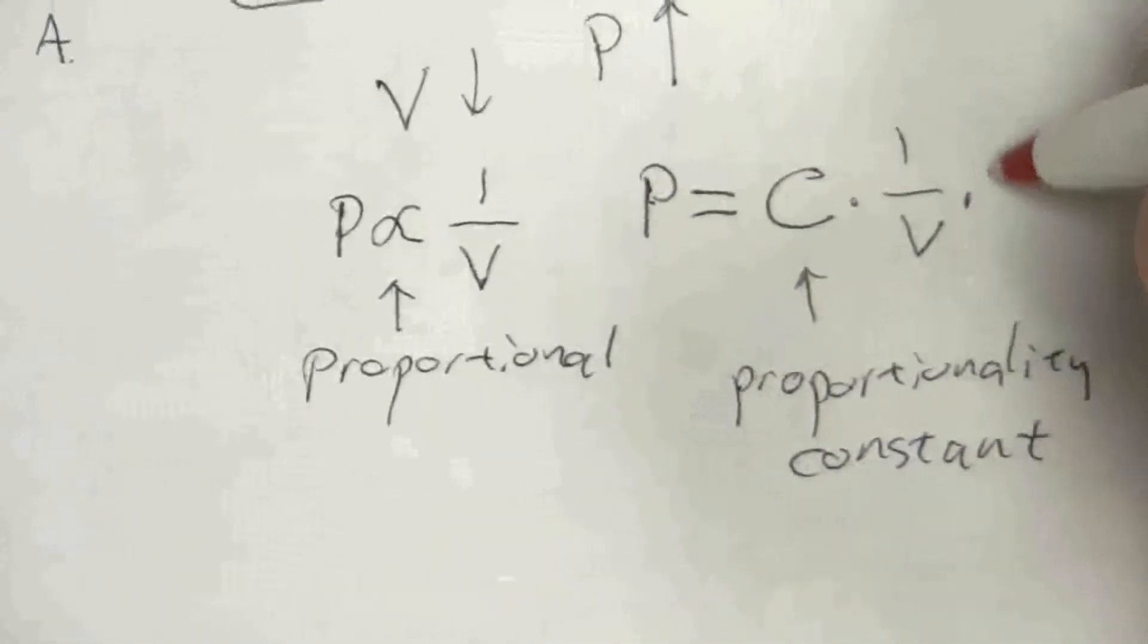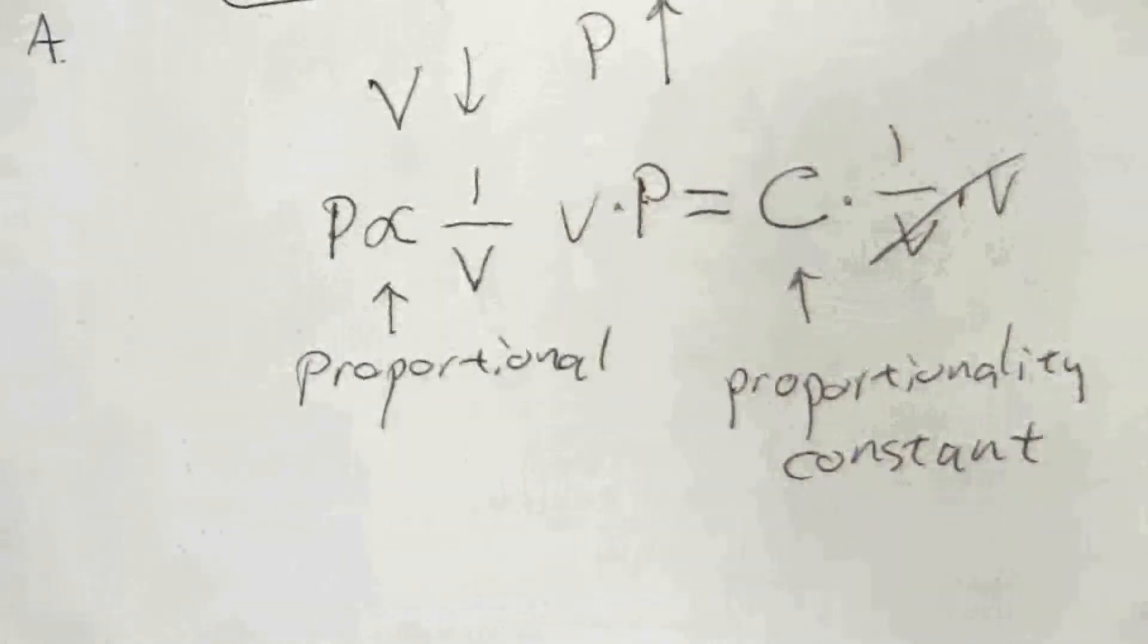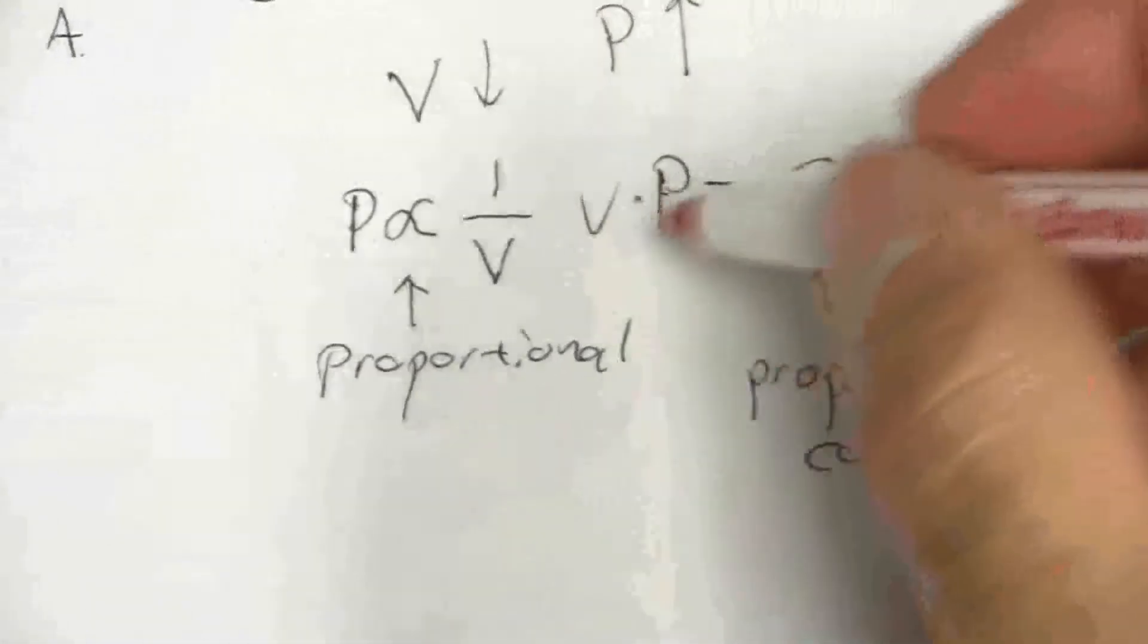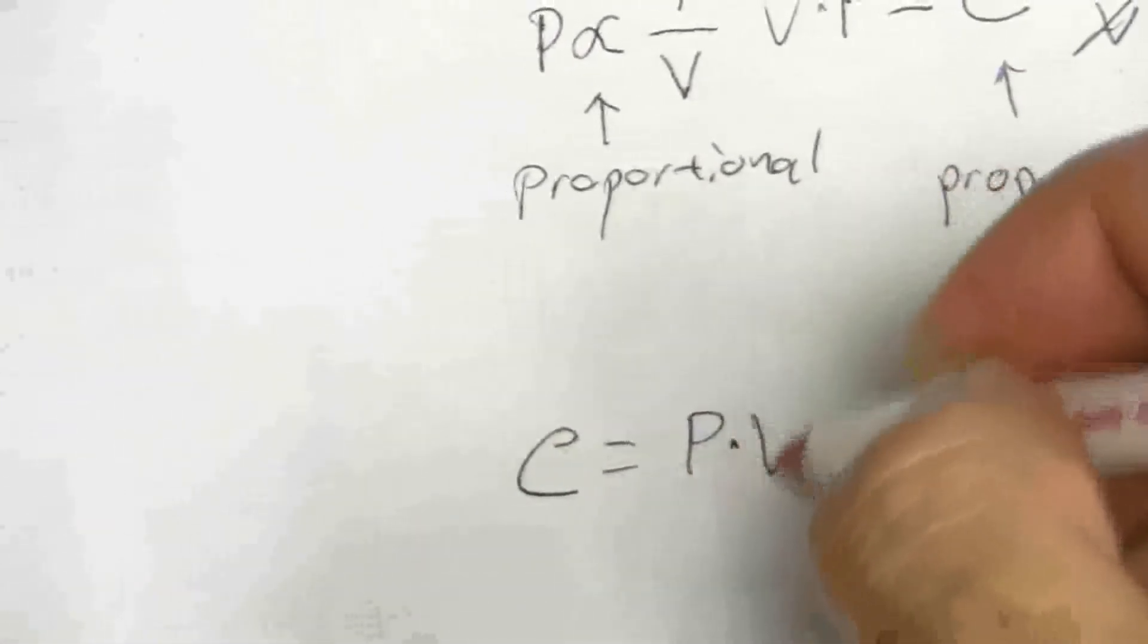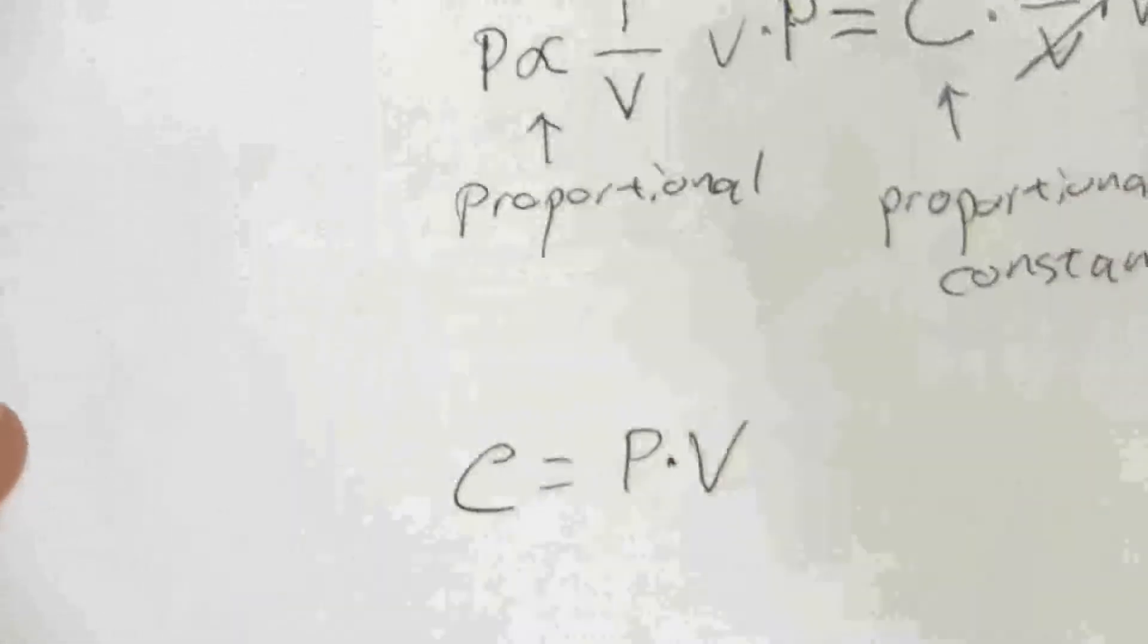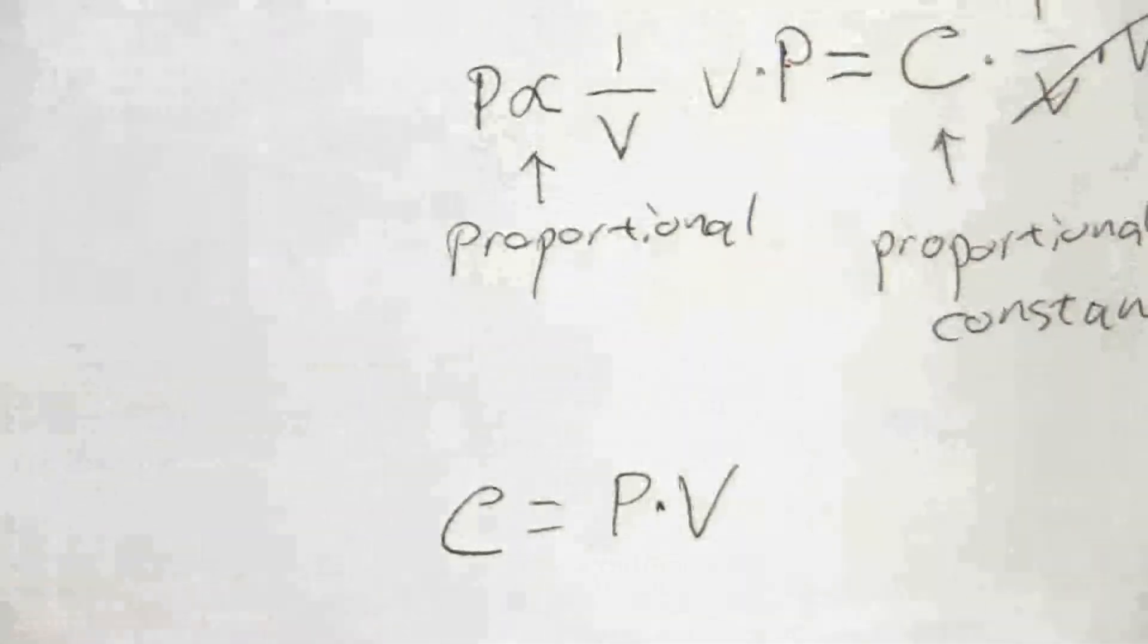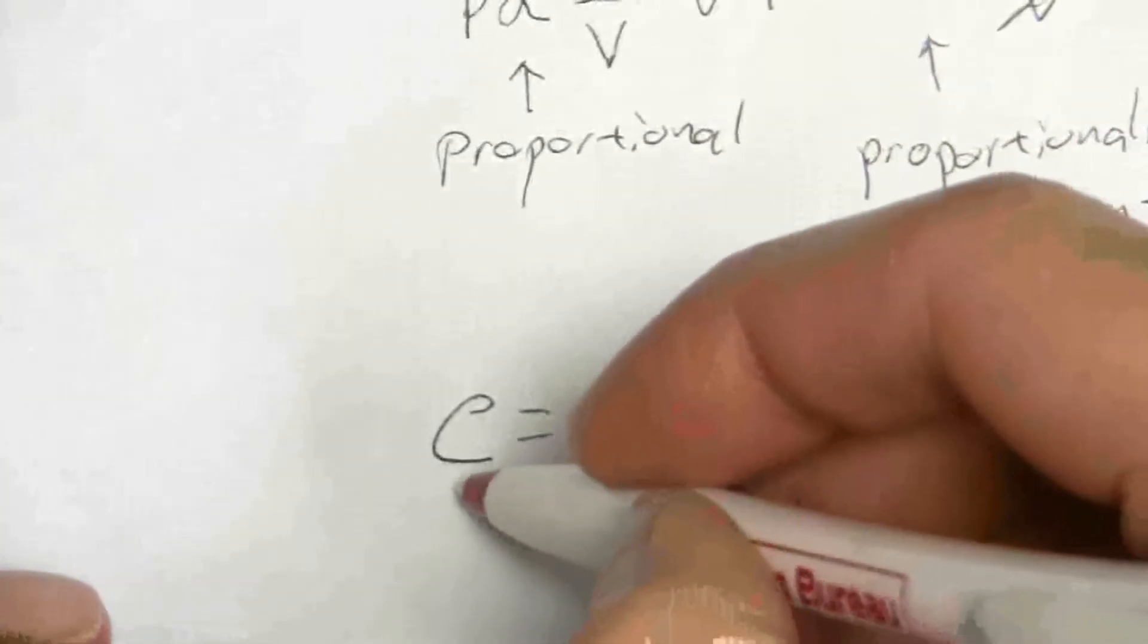So if we solve for this constant, we have one over V. So if we multiplied both sides by the volume, that would cancel, and I'll have my constant equals pressure times the volume. This is an arrangement that we typically put it in instead of V times P. It doesn't really matter. So this is a constant.